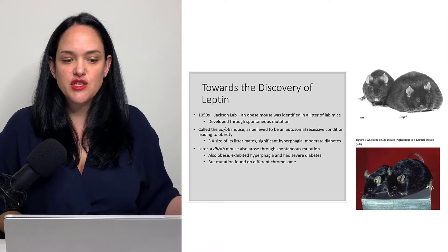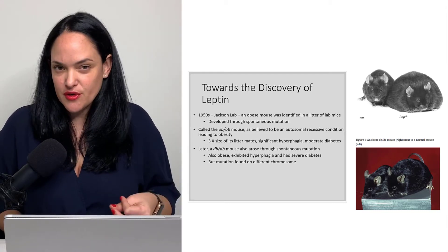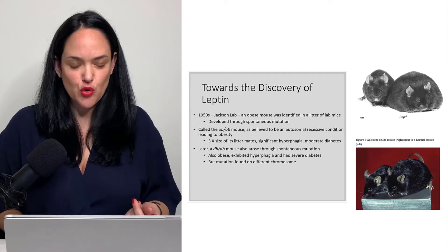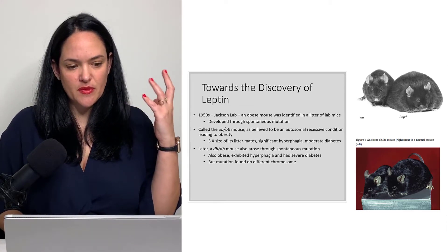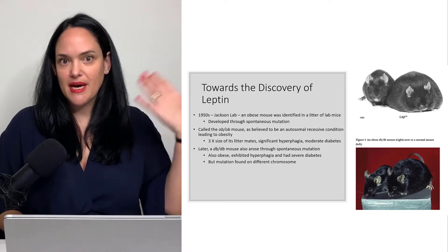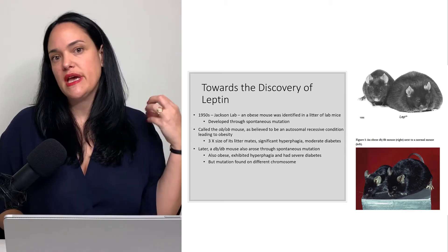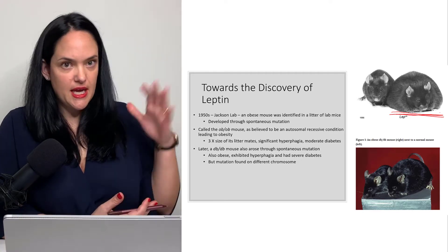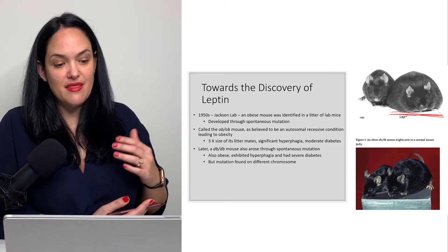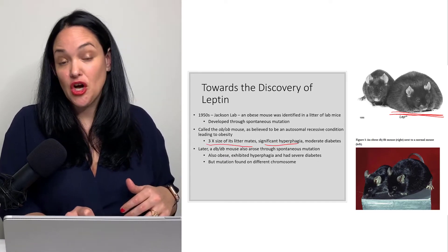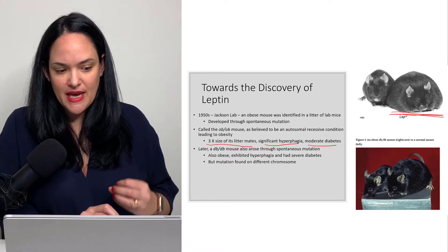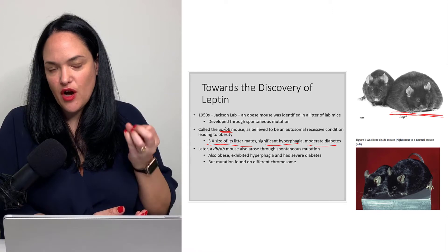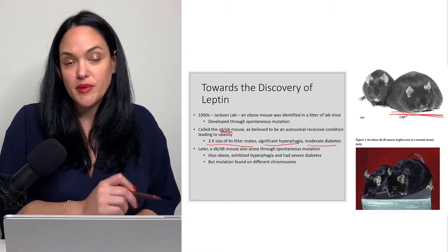I really want to start this conversation about leptin by going over how it was discovered, because it gives you an idea of the scientific process, but also why it was so groundbreaking. Back in the 50s in Jackson's lab in the United States, they had mice they were continuously breeding, and all of a sudden a mouse with a spontaneous mutation was discovered within an otherwise normal litter — about three times the size of its littermates, ate a lot, and had moderate levels of diabetes. They named it the OB/OB mouse, OB for obesity, because they believed this mouse had some sort of autosomal recessive condition that promoted the obesity they found.